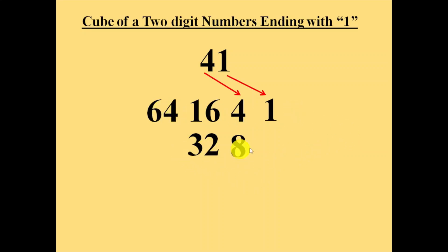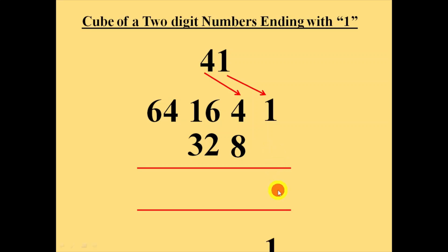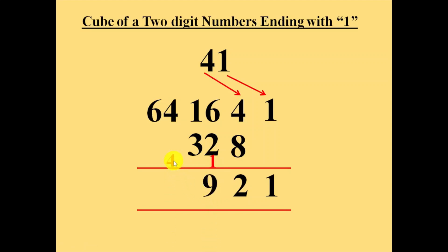Now add these 2 lines. 1 plus 0 is 1. 8 plus 4 is 12 — note down 2 here and carry forward 1. Again, 16 plus 32 is 48, plus 1 is 49 — note down 9 here and carry forward 4. Then 64 plus 4 is 68. Finally, the cube of 41 is 68921.